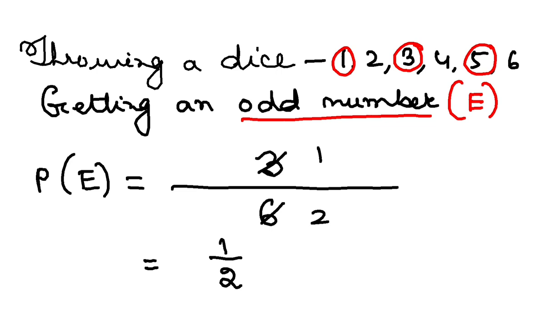So probability of getting an odd number while throwing a dice is 1 by 2 or half. So this is how you are going to calculate probability.